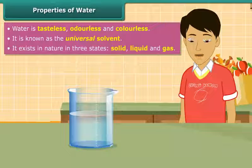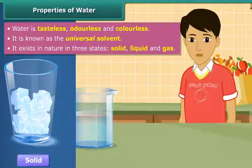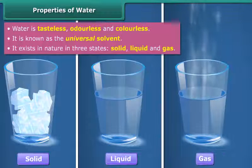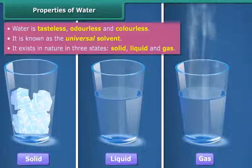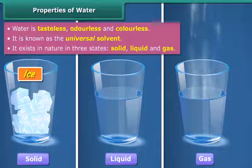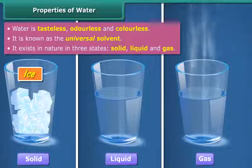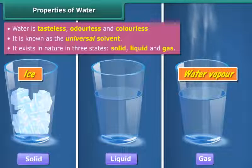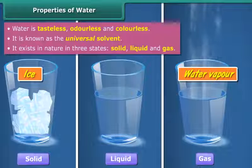Water exists in nature in three states: solid, liquid, and gas. In solid form, water is known as ice or snow. In gaseous form, water is known as water vapor or steam.